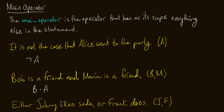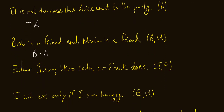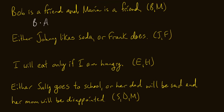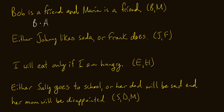Next: 'Either Johnny likes soda or Frank does.' We're using the letters J and F. We have an 'or,' so this is a disjunction. We will use J∨F.